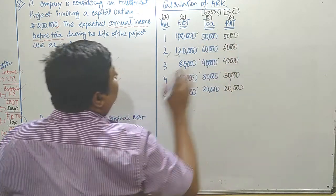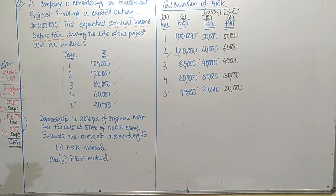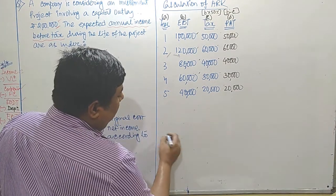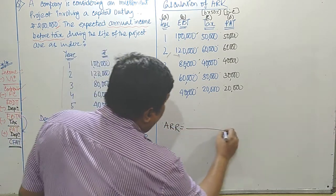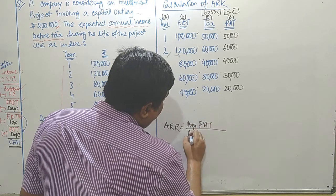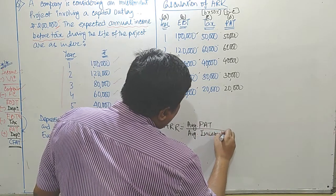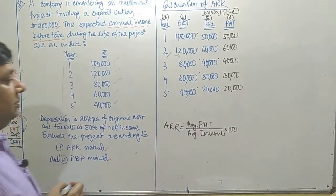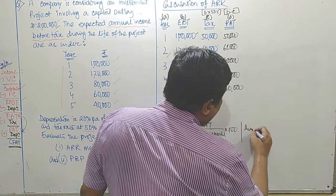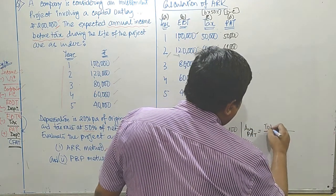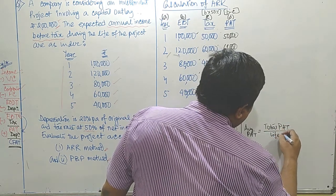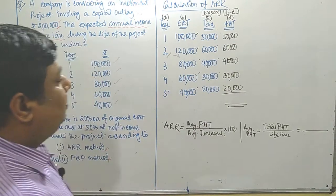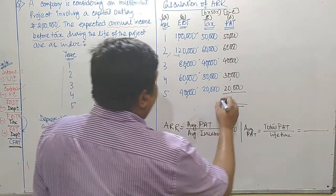In case of a 50 percent tax rate, things become very much easier — you get almost the same figure in both the tax column and the PAT column. PAT is calculated. The formula of ARR is average PAT divided by average investment multiplied by 100. To get average PAT, the formula is total PAT divided by lifetime. Total PAT: 50 plus 60 is 1,10,000; plus 40 is 1,50,000; plus 30 is 1,80,000; plus 20 is 2 lakhs.